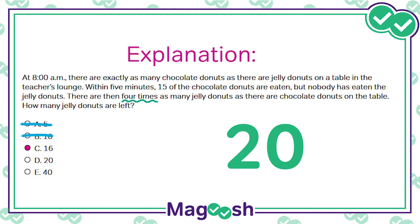In C, there are 16 jelly donuts left, which means there must be 4 chocolate. If there are 4 chocolate donuts after the 5 minutes are up, there must have been 19 at the start. 19 chocolate and 16 jelly don't match up, so that's no good.